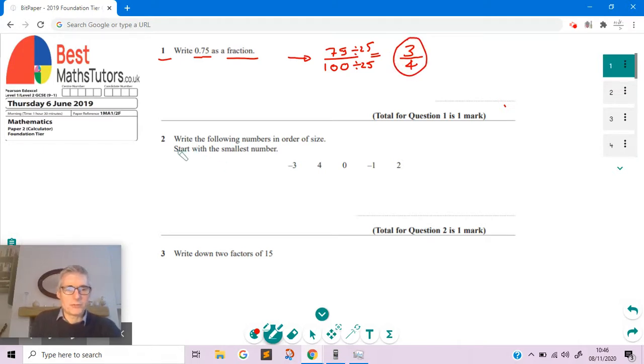We're looking at question two now. We've got to write these numbers in order of size starting with the smallest. I think the easiest way to look at this is think of a number line. If we put zero in the middle, then we'd go minus one, minus two, minus three. I'm making this long enough so I can fit all the numbers on here.